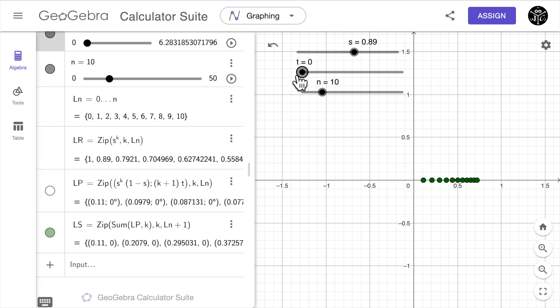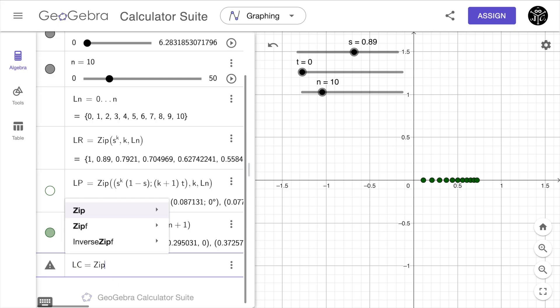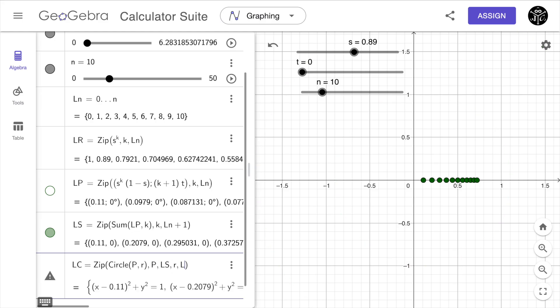Finally we just need to plot all the circles. We can define these as a sequence using again the zip command. So we type lc equal to zip and we are going to use the circle command. Each circle has a center p and radius r where p belongs to the list ls and r belongs to the list lr.